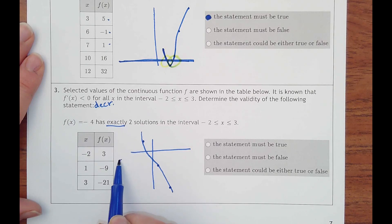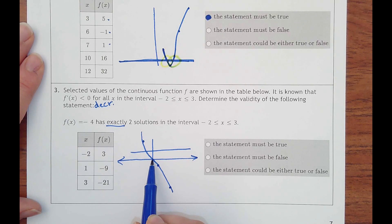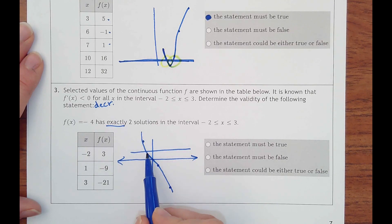And we want to know at y equals negative four. So think about a horizontal line. How many times is our line going to go through a y value of negative four? And so I know it's got to cross through once.